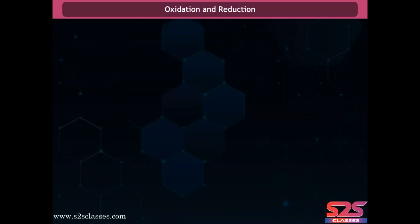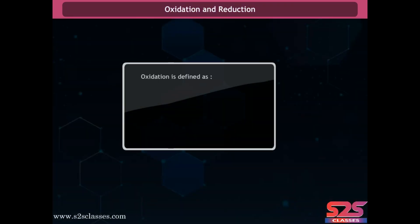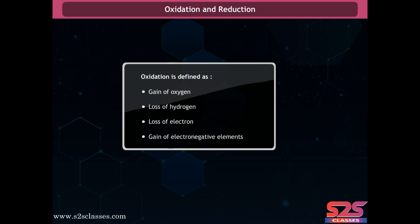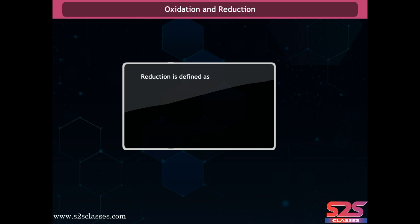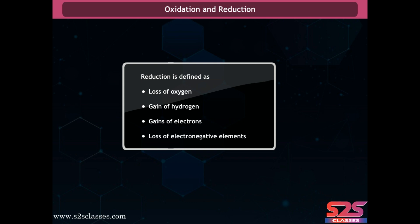Oxidation is defined as a process that involves gain of oxygen, loss of hydrogen, loss of electrons, and gain of electronegative elements. Reduction is defined as a process that involves loss of oxygen, gain of hydrogen, gain of electrons, and loss of electronegative elements.